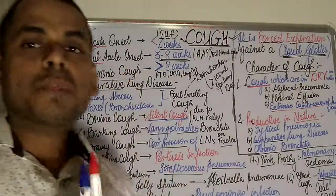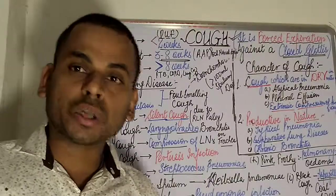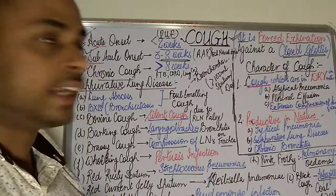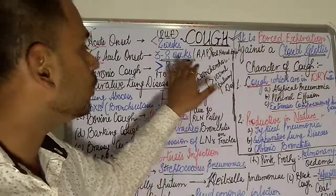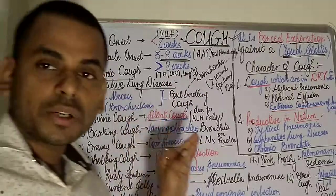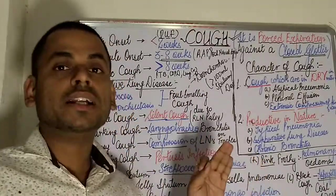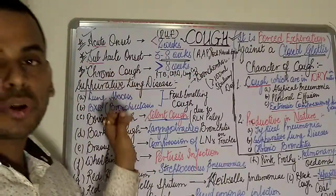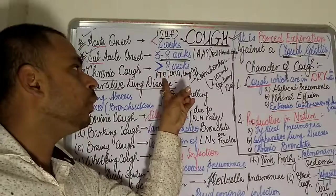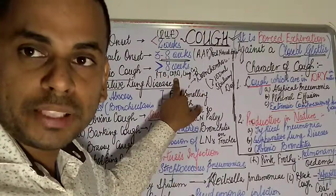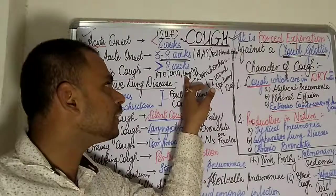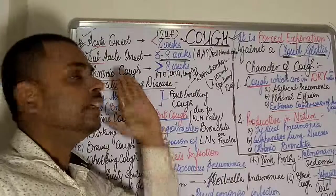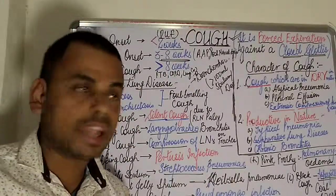A patient is said to have chronic cough when the duration is greater than eight weeks. Common examples of chronic cough include tuberculosis, chronic obstructive pulmonary disease, and lung cancer, where the cough persists for longer than eight weeks.